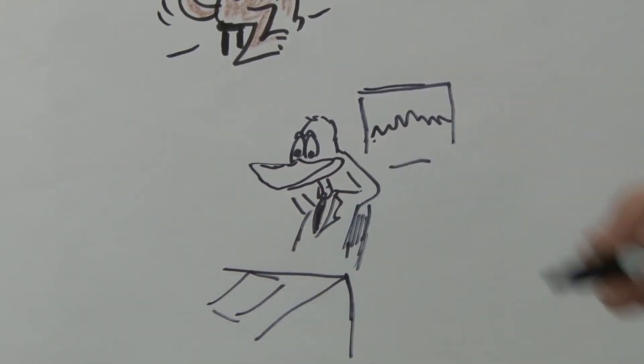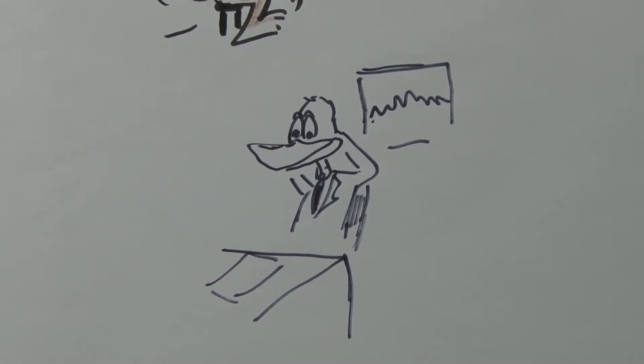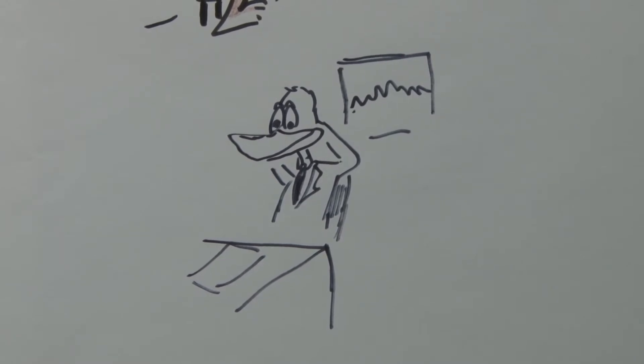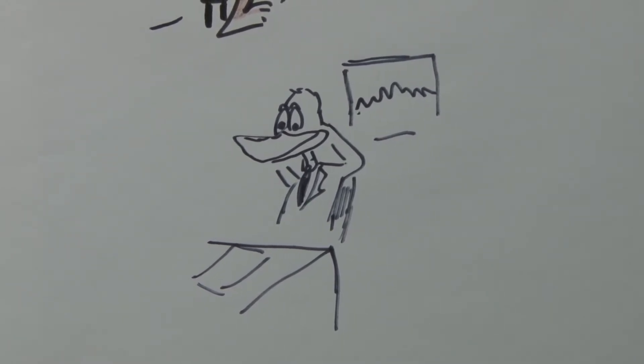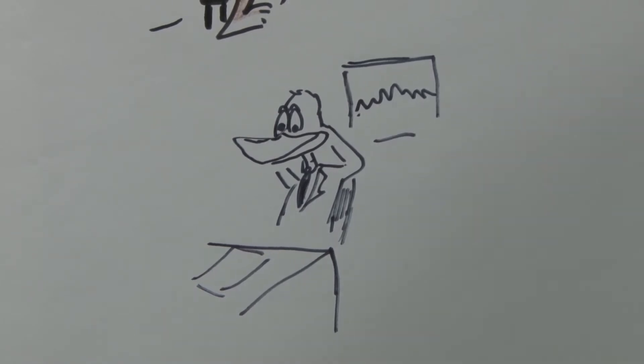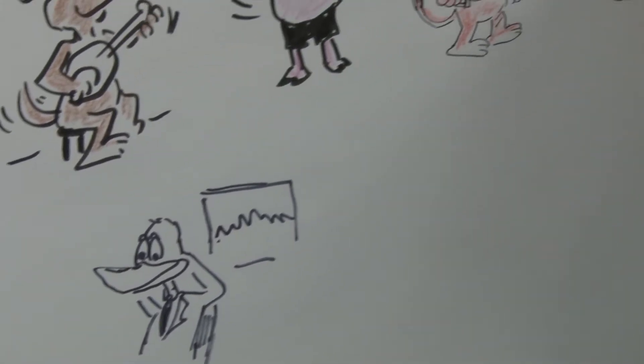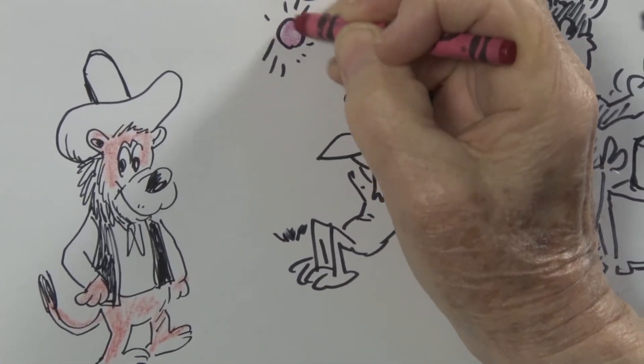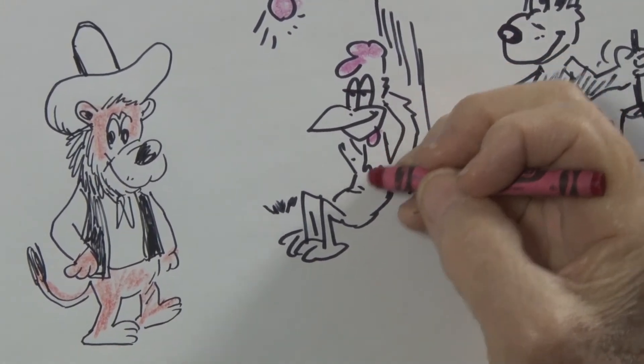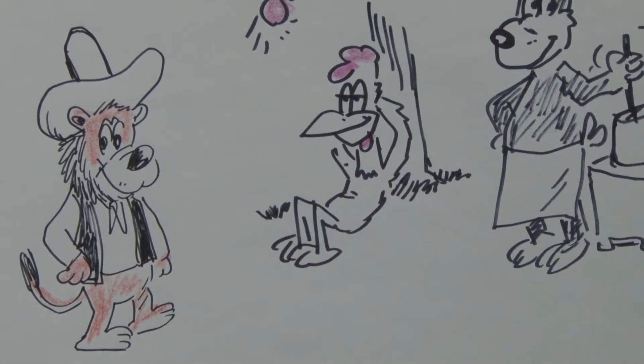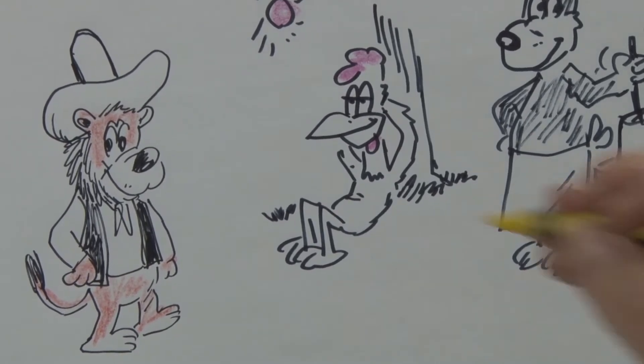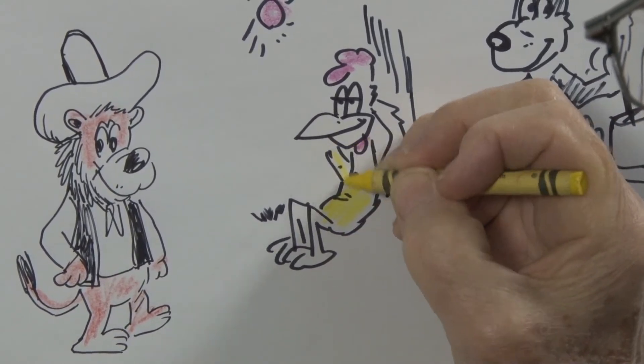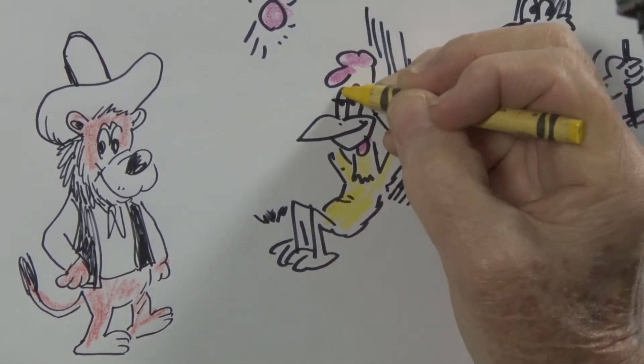Well, as we did with the creatures before the break, let's see if we can color up these characters. Okay, the rooster's got a little red trimmings here. I'm going to put a little red on that springtime sun.